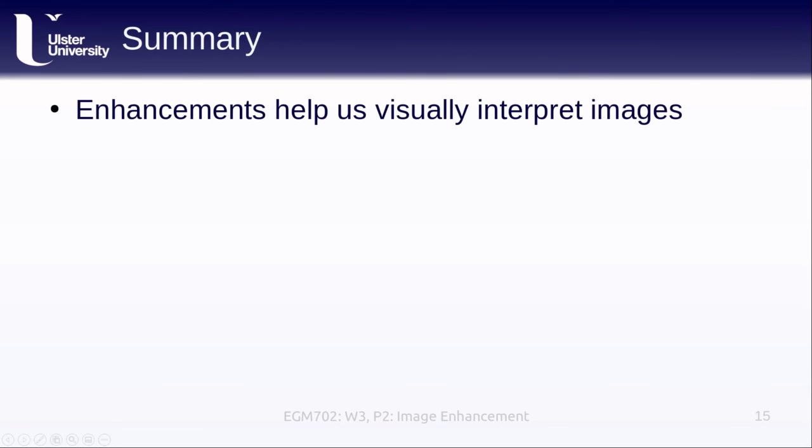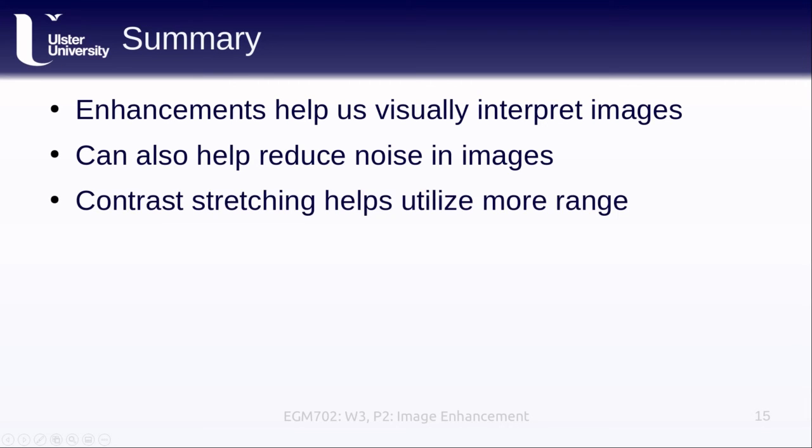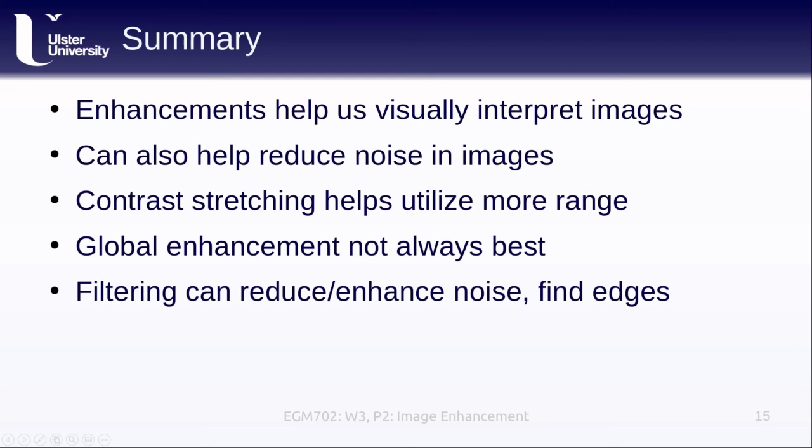In this lesson, we learned how we can use enhancements to help visually interpret images. They can also help reduce noise in images. We learned how we can use contrast stretching to help utilize more of the range of the image. And we learned that things like global enhancements might not always be the best. We might want to work on smaller subsets of the image in order to bring out the contrast in each of those smaller regions. We also learned that filtering can help us reduce or enhance noise or high frequency variation and help us to find edges in the image.